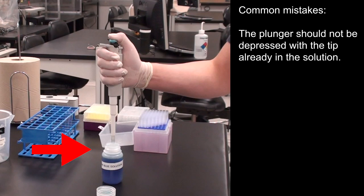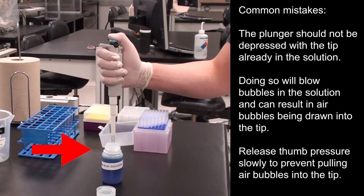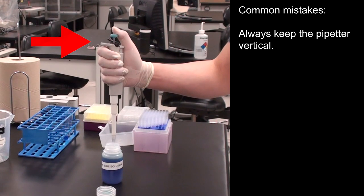The plunger should not be depressed with the tip already in the solution. Doing so will blow bubbles in the solution and can result in air bubbles being drawn into the tip. Release thumb pressure slowly to prevent pulling air bubbles into the tip.